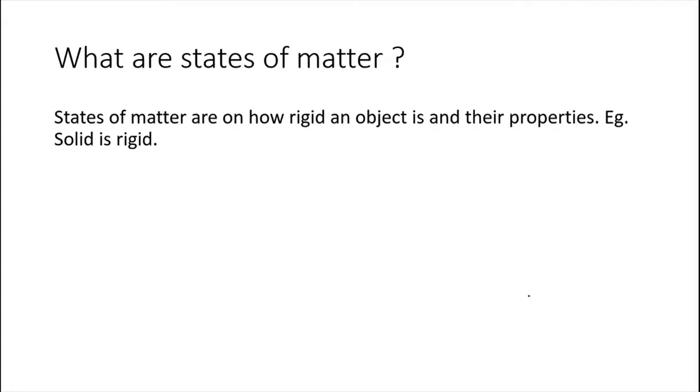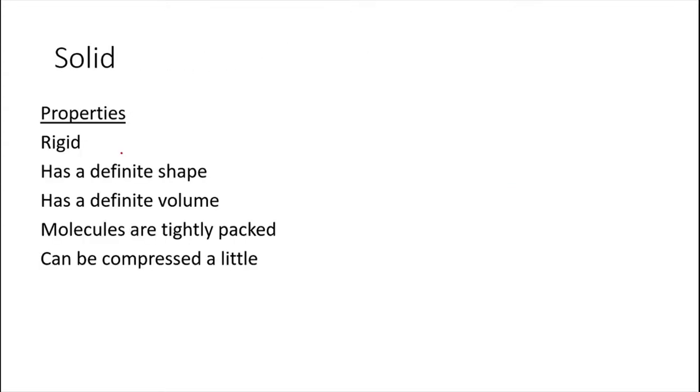Let's talk about what are the three states of matter. States of matter are based on how rigid an object is and their properties. I'm going to talk about the properties today. For example, solid is rigid, which is a property of solid. The first property is solid is rigid.